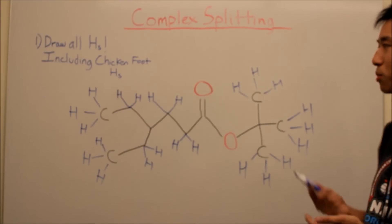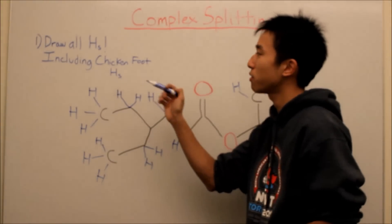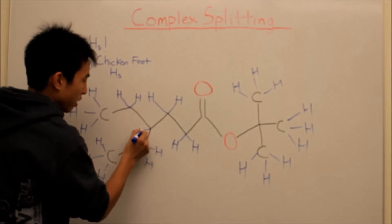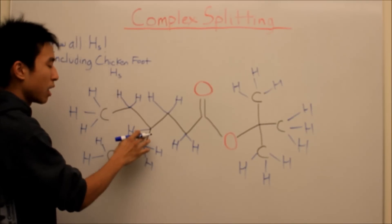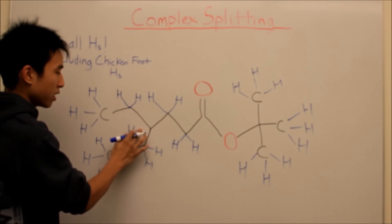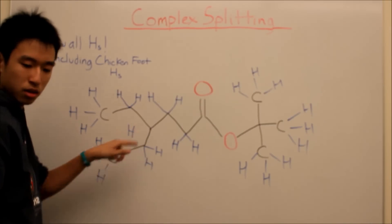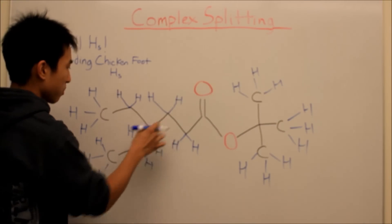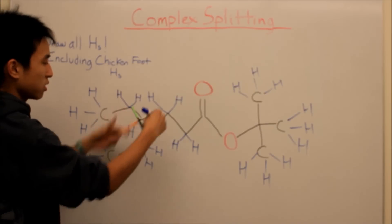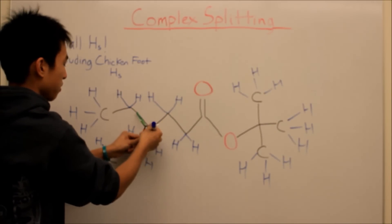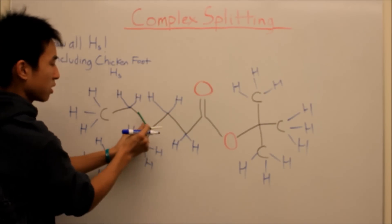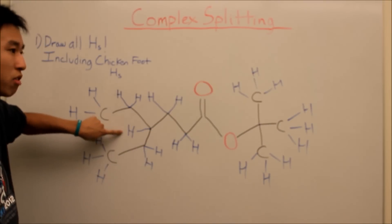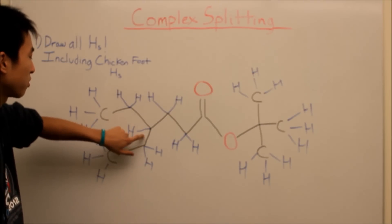Are you done? Nope. Because I actually specifically left out the chicken foot hydrogen, which is this one right here. I like to call it that because if I didn't have it here, this carbon wouldn't be a chicken foot — it would just be three bonds, and a chicken foot is just this. So I have one, two, three, but I'm missing this guy right here. There we go. This is the hydrogen that everybody always misses on the test, so make sure you don't forget about this one.